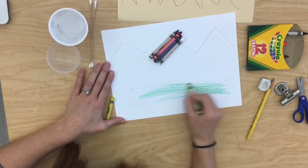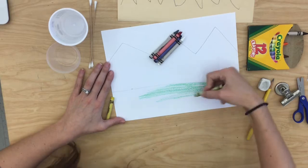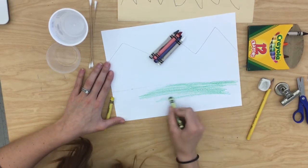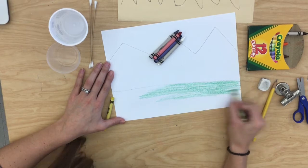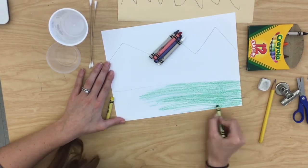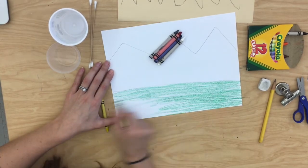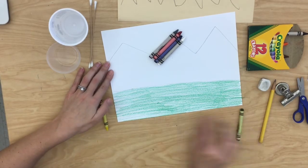I want to color this entire rectangle down here at the bottom of the paper. Notice I'm coloring nicely back and forth in the same direction. I don't want to keep changing the way my hand goes when I color. Instead, I'm going to keep coloring in that same direction. Color that entire bottom rectangle.